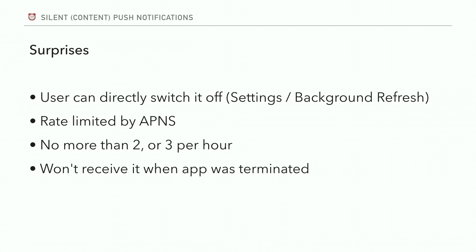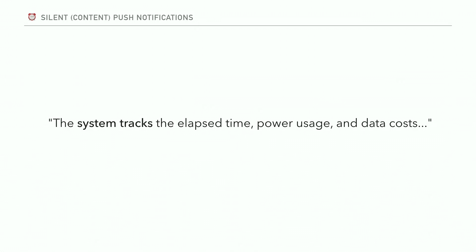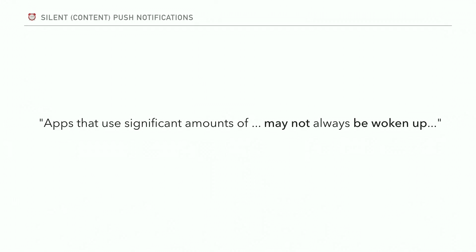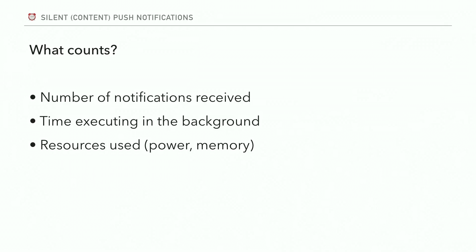Apple says the system tracks elapsed time, power usage, and data costs of whatever you do in that 30-second background execution window. If you use significant amounts of any of those resources, you may not always be woken up for the next notifications. What counts is: number of notifications received, time executing in the background, and resources used. The good news is it's partly up to you how reliably the system delivers these notifications. If you're quick in processing them and mindful of resource management, you have a better chance of making this feature more reliable.